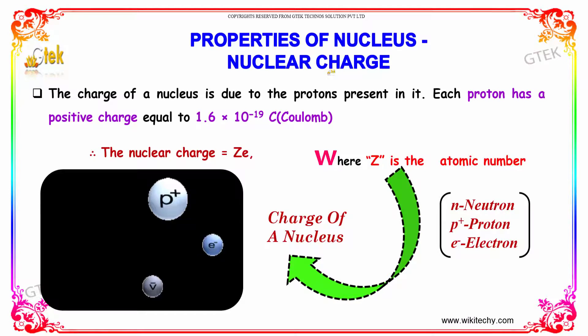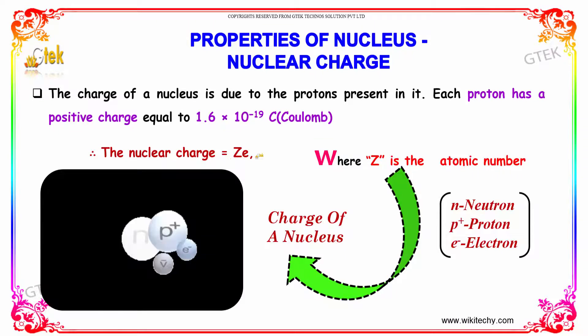Now we will talk about the nuclear charge. The charge of the nucleus is due to the protons present in it. Each proton has a positive charge equal to 1.6 into 10 power minus 19 coulomb. The nuclear charge equals Z into E, where Z is the atomic number and E is the electron charge.